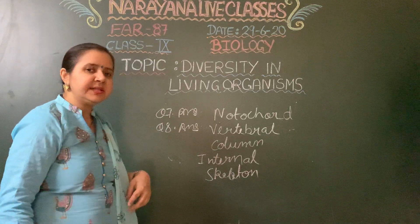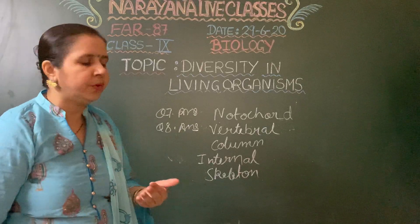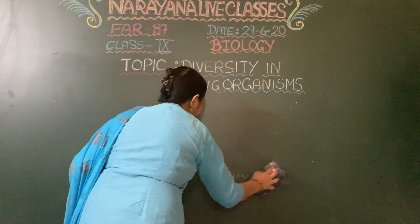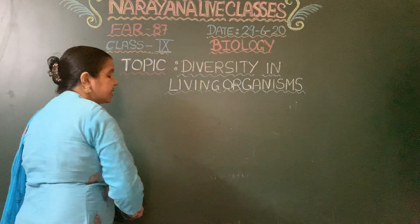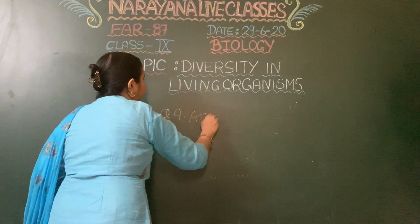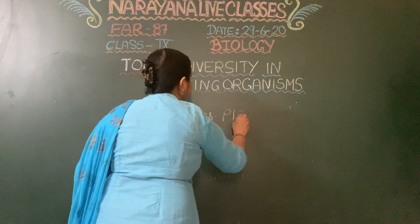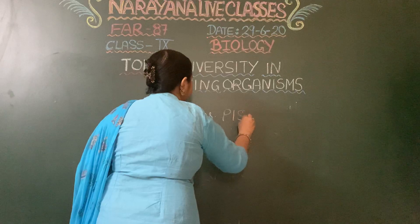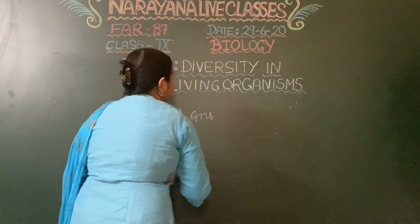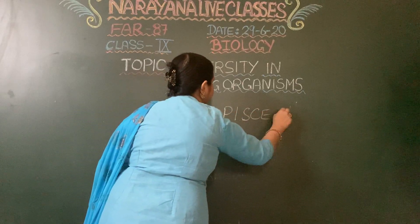Question number 9: electric ray, stingray, and scoliodon — which group do they belong to? All three — the electric ray, the stingray, and scoliodon — are all fishes, so they belong to the phylum Pisces.